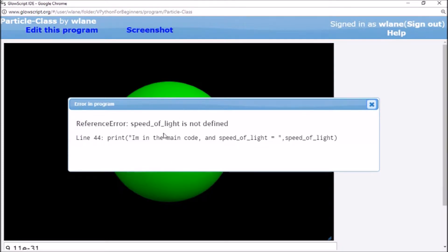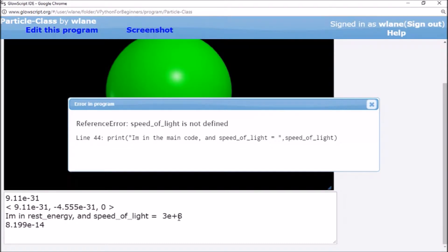So notice I get an error message. In particular it tells me on line 44 when I'm trying to print I'm in the main code, it tells me speed of light is not defined. Now, if you look at the print output, it was able to do this just fine in rest energy. So when we're in the rest energy function, it's able to tell me what speed of light is, three times 10 to the eight.